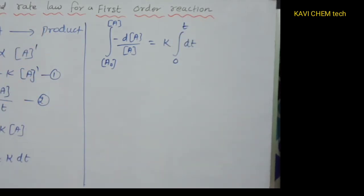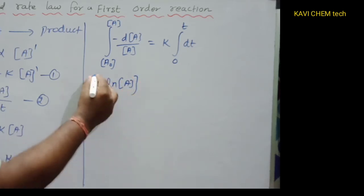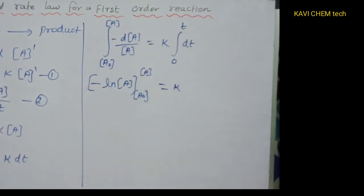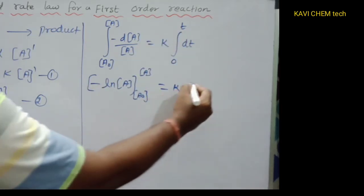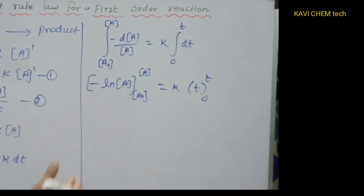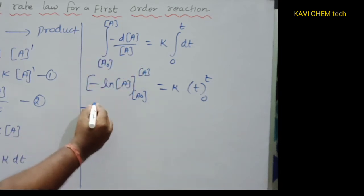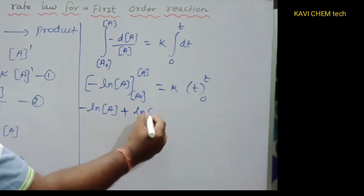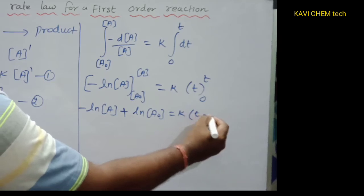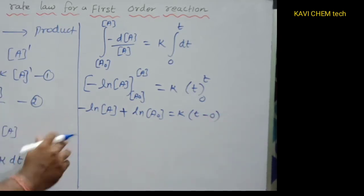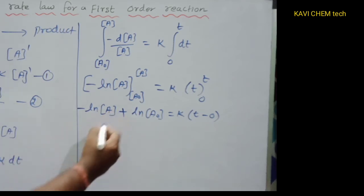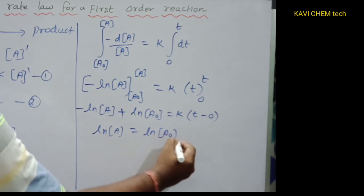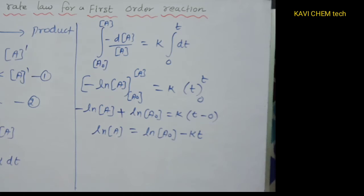When I integrate minus dA/A with limits A₀ to A, I get minus ln[A] evaluated from A₀ to A, which equals K times t evaluated from 0 to t. Substituting the limits — upper limit minus lower limit — we get minus ln[A] plus ln[A₀] = Kt. Rearranging, ln[A] = ln[A₀] − Kt.